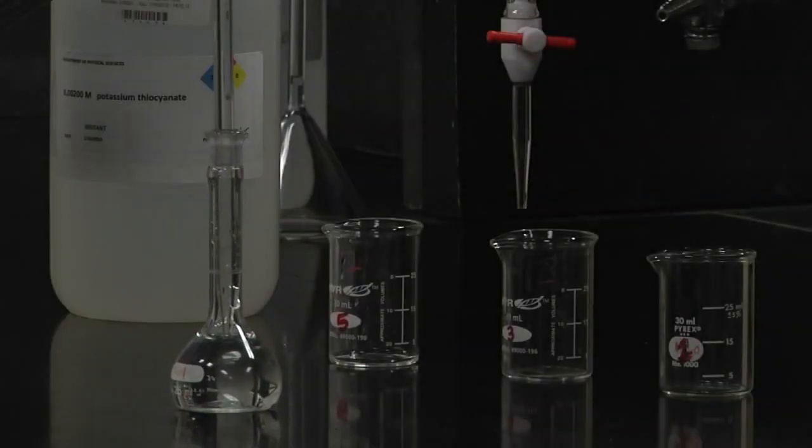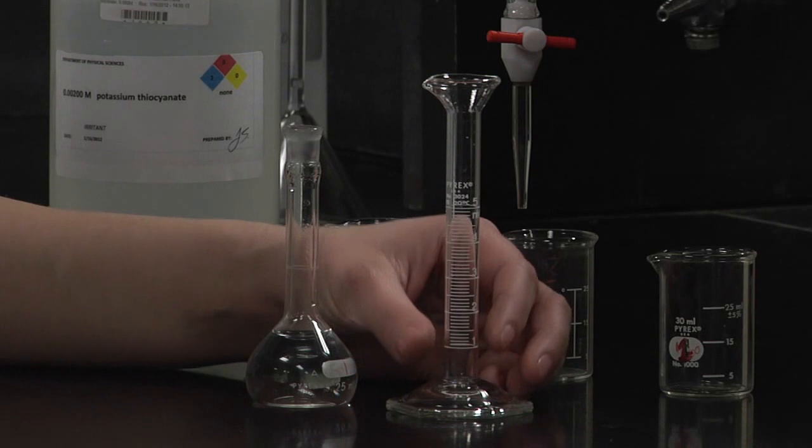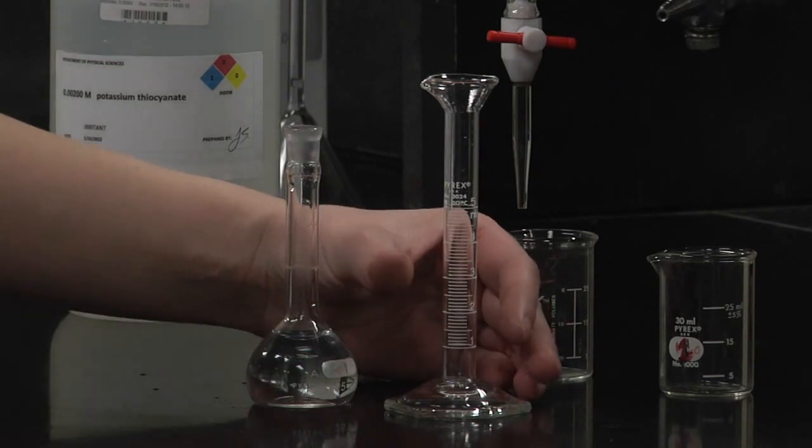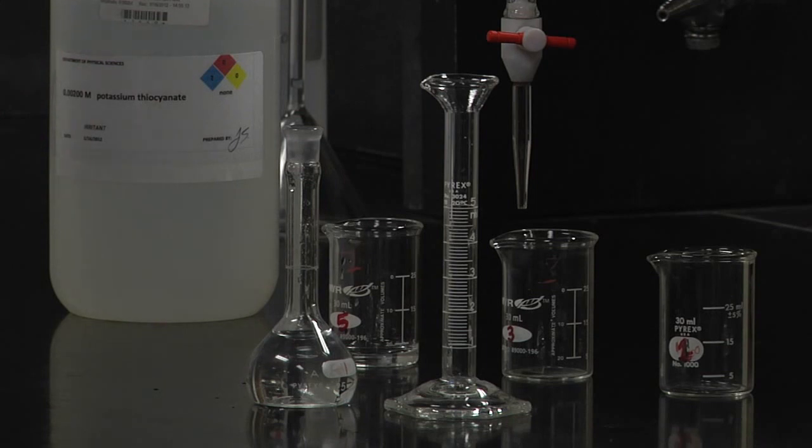Now we're going to take our 5 milliliter volumetric pipette and fill it to the calibration mark. For beaker number three, we're going to add 3 milliliters of this. If you don't have a 3 milliliter volumetric pipette, what I like to use is just a Pasteur pipette and a graduated cylinder.